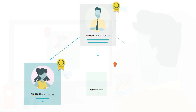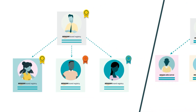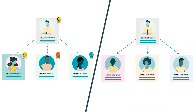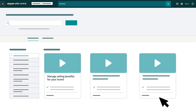Before we begin, it's important to note that this process is distinct from processes used to extend listing privileges and selling benefit eligibility to additional Seller Central accounts. For more information about these other processes, see our Seller University video, Manage Selling Benefits for Your Brand.